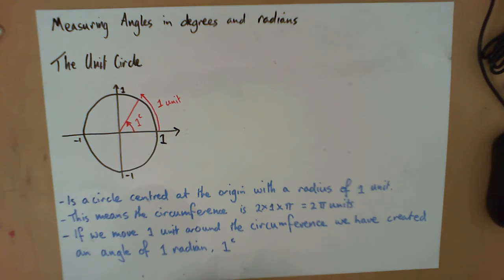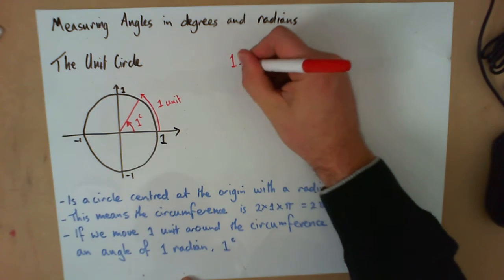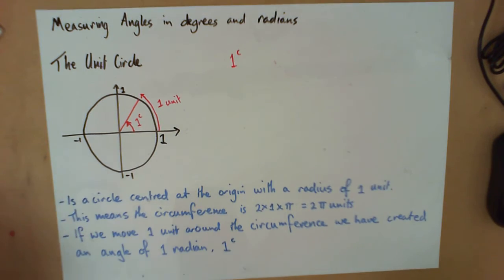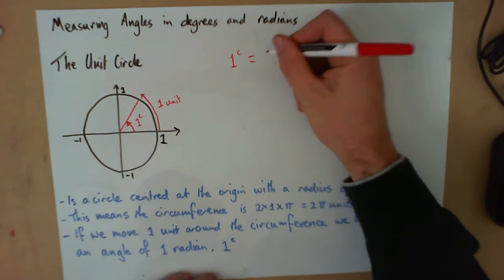Now we need to be able to convert from radians to degrees and vice versa. What we can say is, with 1 radian - and note there's not degrees radian, we have degrees and we have radians - so 1 radian is equal to 180/π.